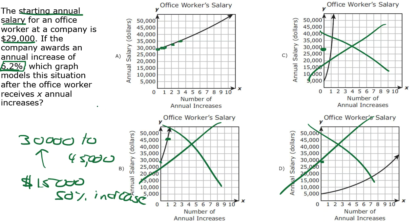Now, there is another way to work this problem using your graphing calculator, but you'd have to write out the function in the form Y equals A times B to the X, where B is our growth factor and A is our starting amount.